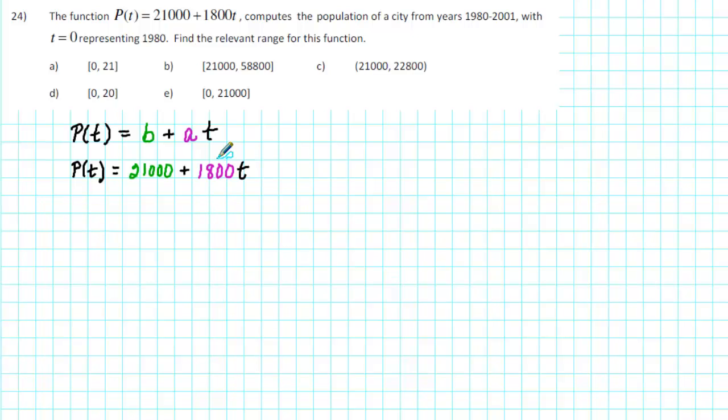Using that information, we can draw a qualitative graph of P. The formula computes the population of a city from years 1980 to 2001 with t = 0 representing 1980. So on our graph, we'll want to start at time = 0 and then go to time = 21 because 2001 is 21 years after 1980.